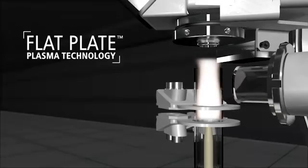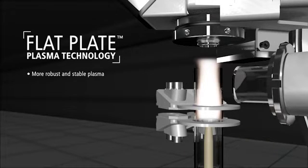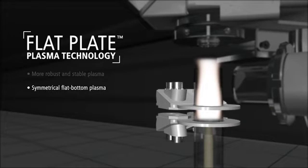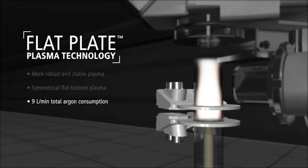The system uses an RF generator with patented flat plate plasma technology, which provides a more compact, robust and stable plasma. The design uses two flat plate induction fields, positioned perpendicular to the sample flow. The resulting plasma is symmetrical and robust, maintaining sample stability with total gas flows as low as 9 liters of argon per minute.